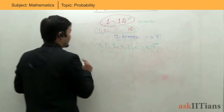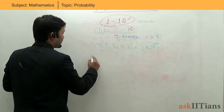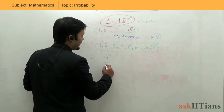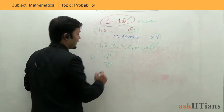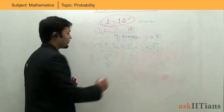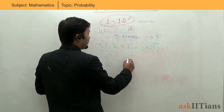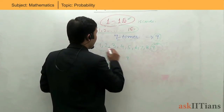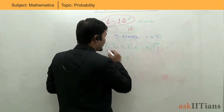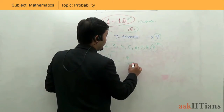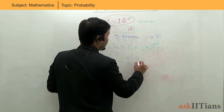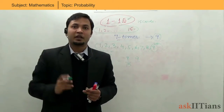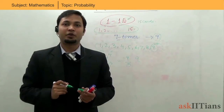The probability of these numbers being chosen would be 9 to the power 7 divided by 15 to the power 7. Each time I am choosing from out of 15 cards, I am choosing from the numbers 1 to 9, so I have 9 by 15 for each draw.